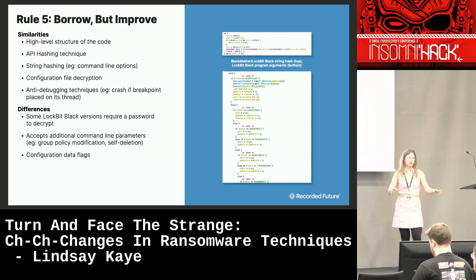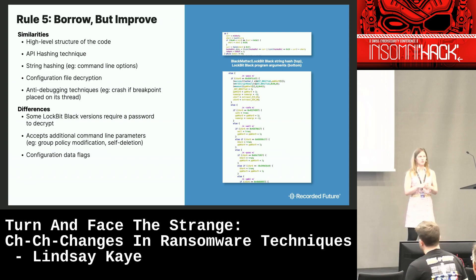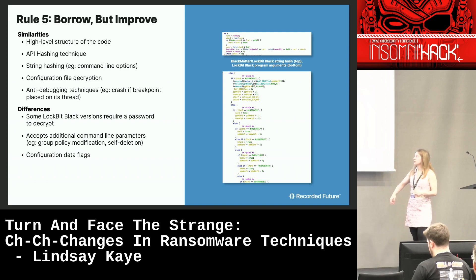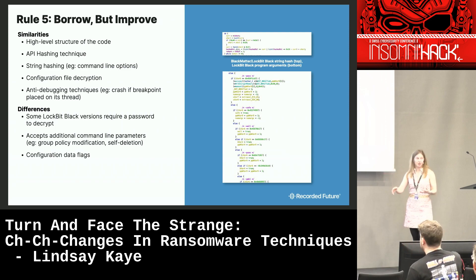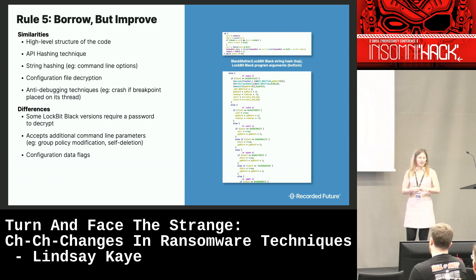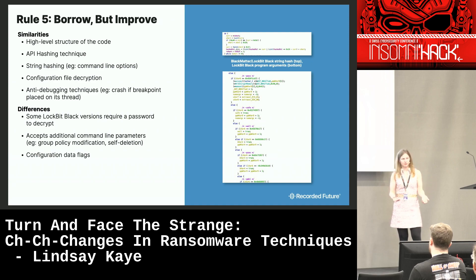The anti-debugging techniques and their combination were also similar — one example is crashing if a breakpoint is placed on the thread. There are some differences: some Lockbit Black versions require a password to decrypt — if you don't provide the right password, it won't run. Other groups like Ragnar have done this. They also added additional command line parameters — things like group policy modification and self-deletion. You can see the Lockbit Black command line argument parsing is very similar in structure to BlackMatter but with these additional options, plus corresponding additional configuration data flags.